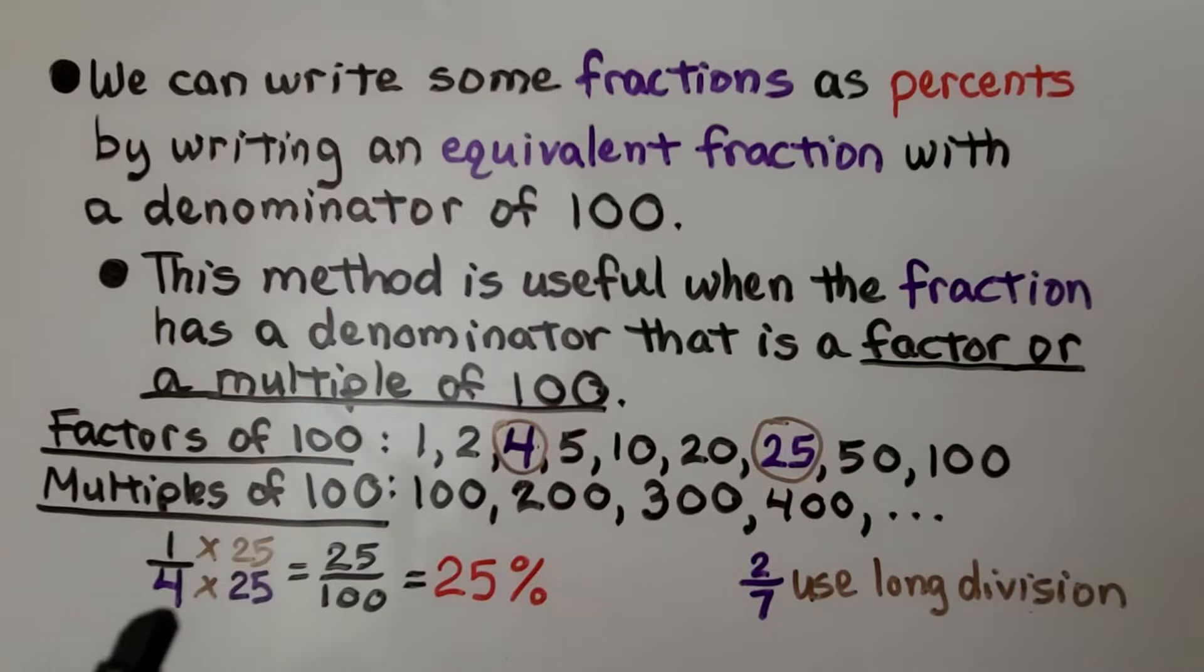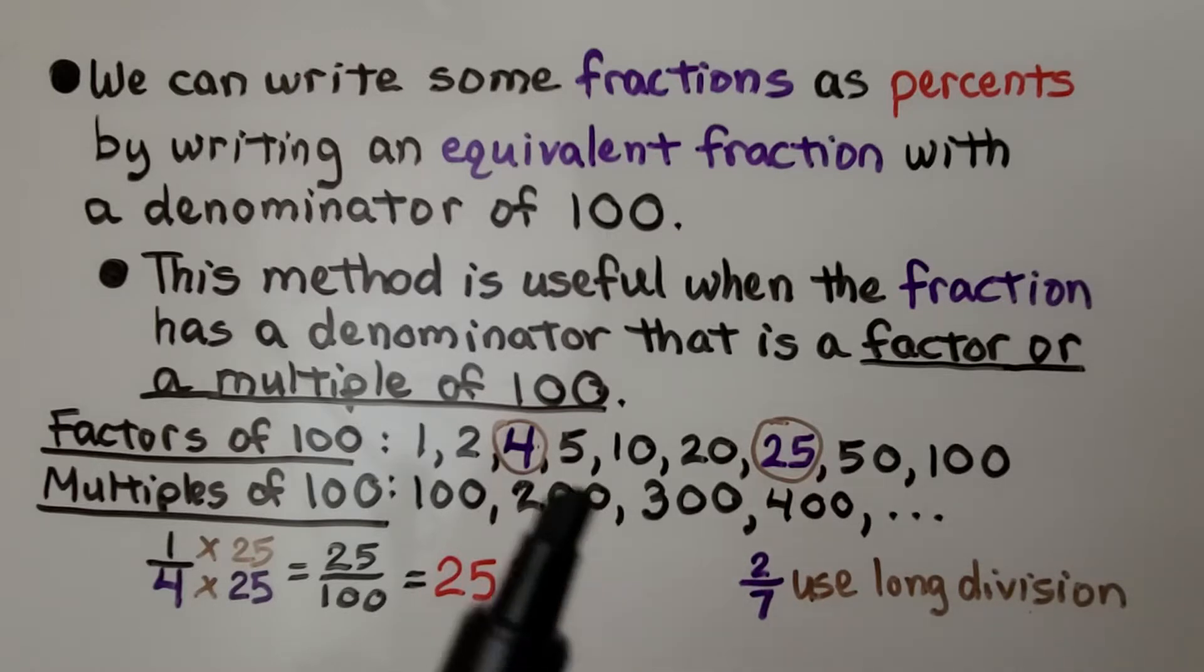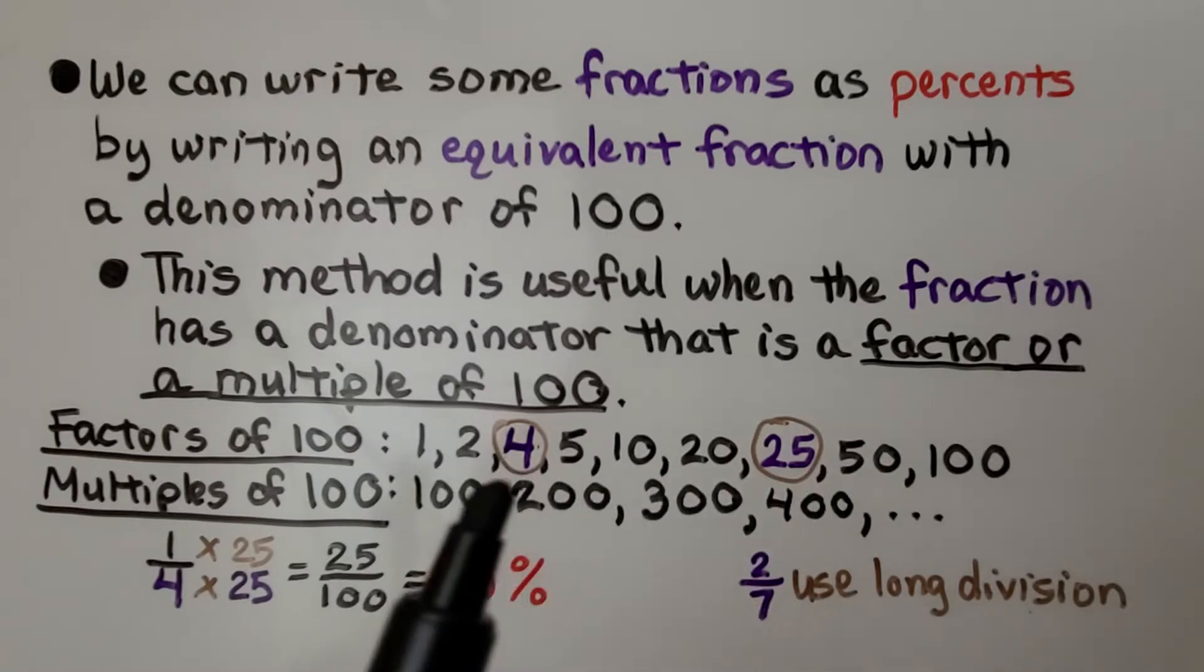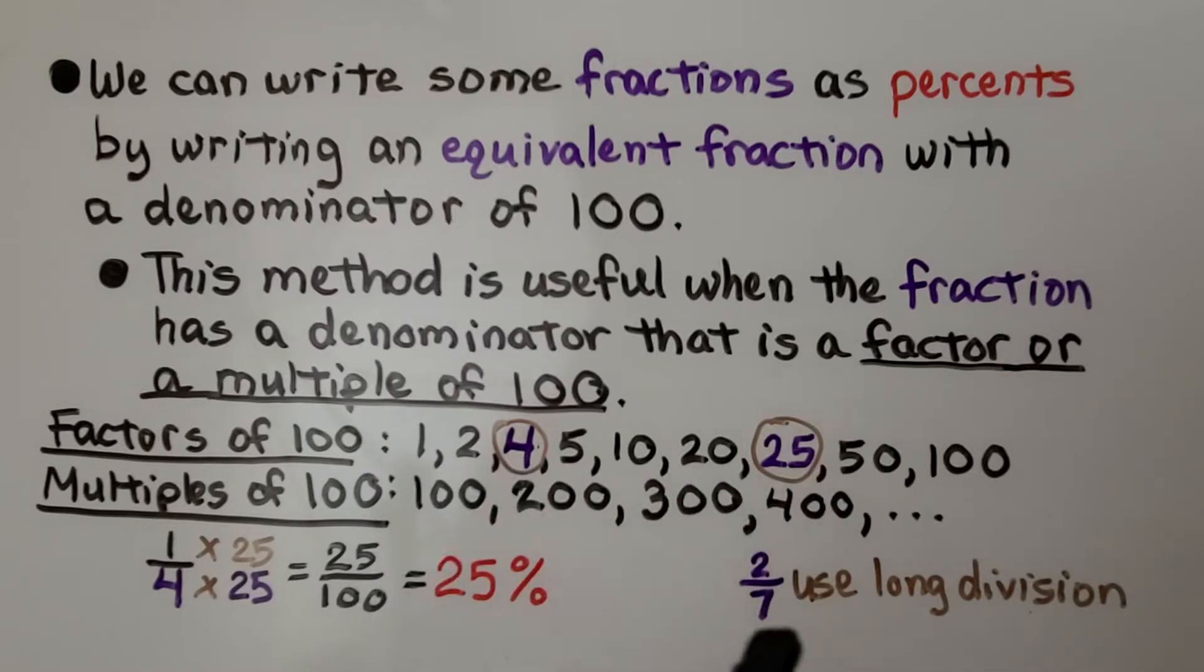So if we have 1 fourth, we can very easily just multiply the numerator and denominator by 25 because those are factors of 100 to write 25 hundredths or 25%. But if we have a fraction like 2 sevenths, 7 is not a factor of 100, so we're going to have to use long division.